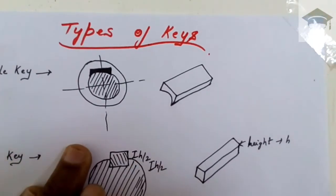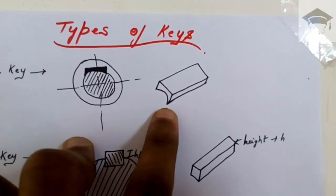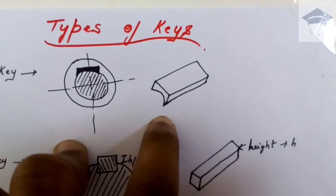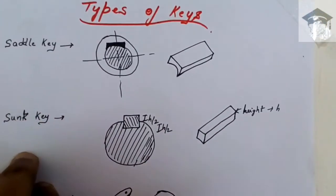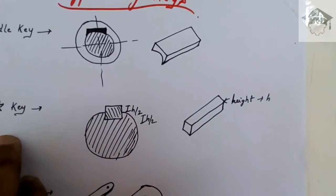Second comes the sunk key. If it is of height h, then half the height, that is h/2, is in the shaft and h/2 is in the hub. It is also fitted by using interference fit.